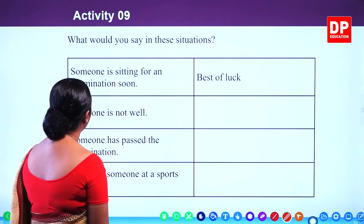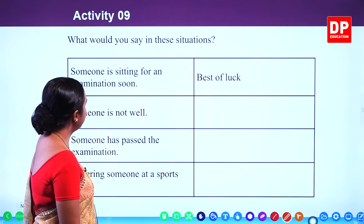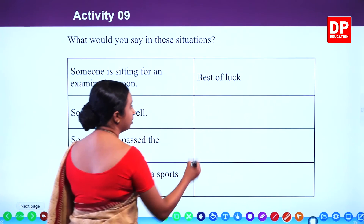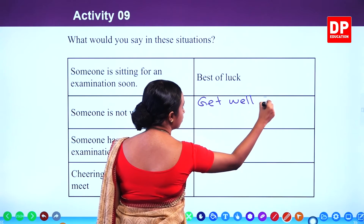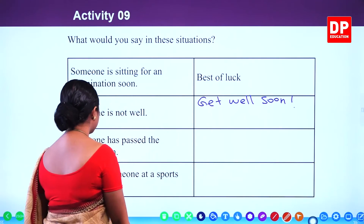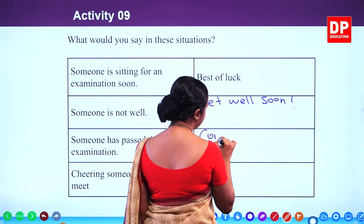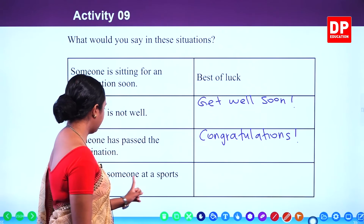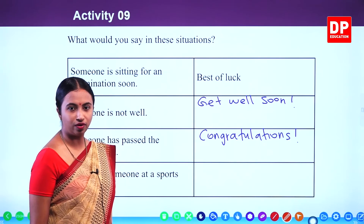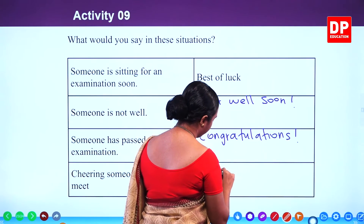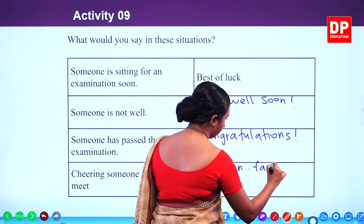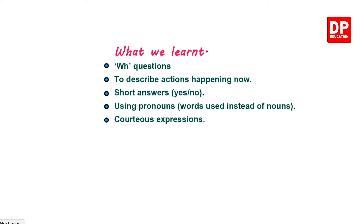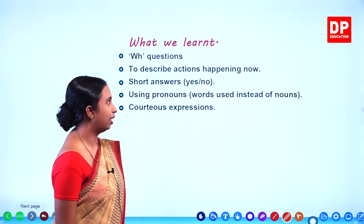Now let's look at Activity 9. What would you say in these situations? Someone is sitting for an examination — best of luck. Someone is not well — get well soon. Someone has passed the examination — congratulations. Note the spelling: congratulations. Cheering someone at a sports meet — what would you say? Come on, faster.